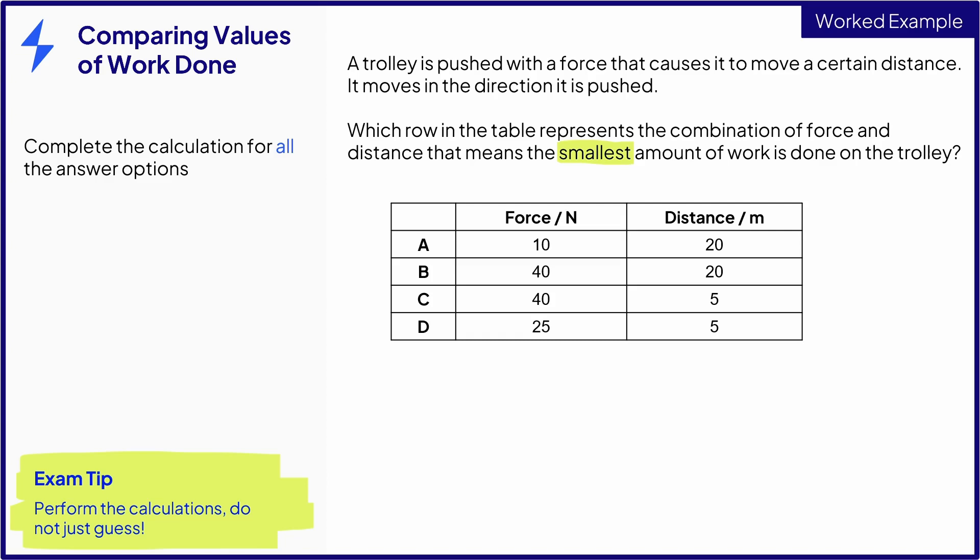So we know that work done is equal to force times distance, and the best way to do this is to add a column to the table for work done. So for option A, when the force is 10 newtons and the distance is 20 meters, the work done is 10 newtons times 20 meters, which is 200 newton meters or joules.